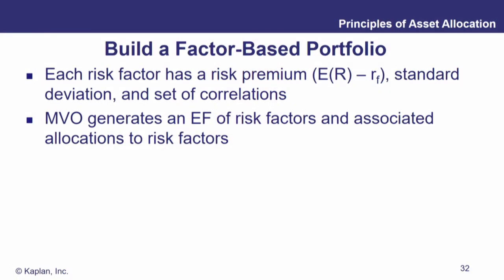If we want to build a factor-based portfolio, each risk factor has a risk premium — whether we're talking about a value versus growth factor, a size factor, a market risk premium, or a duration factor. So we're going to have a risk premium, a standard deviation, and a set of correlations for each one of those risk factors. Mean variance optimization then generates an efficient frontier of risk factors and gives associated allocations to those risk factors.